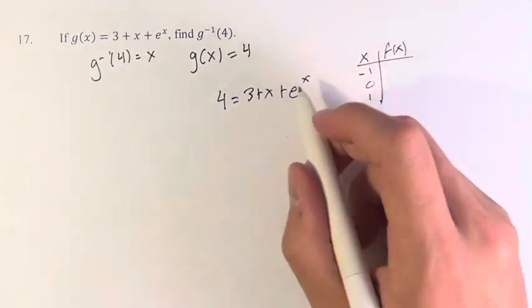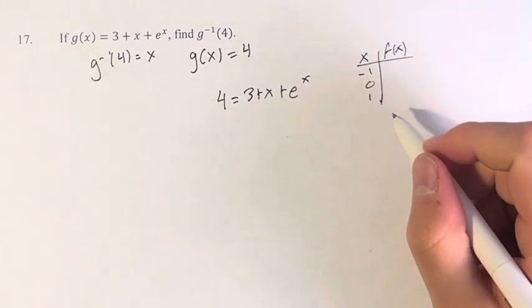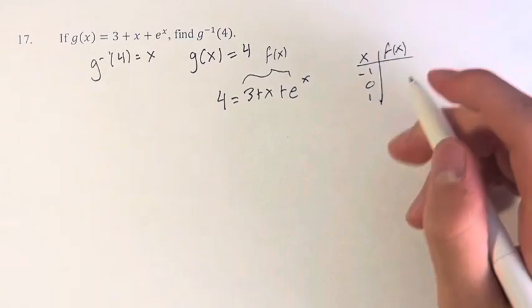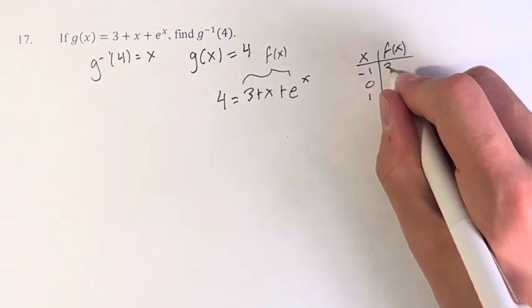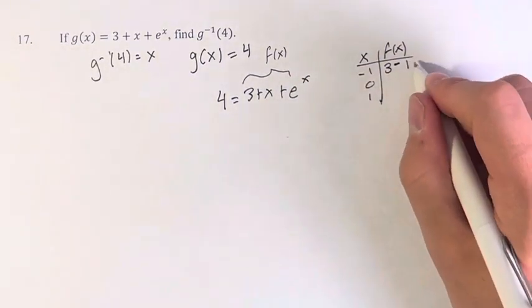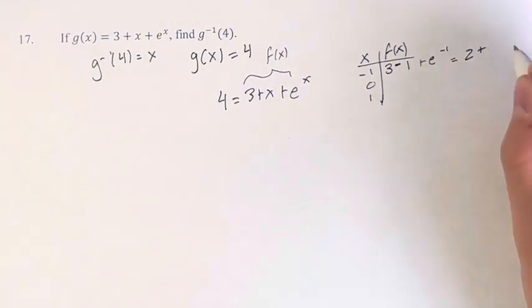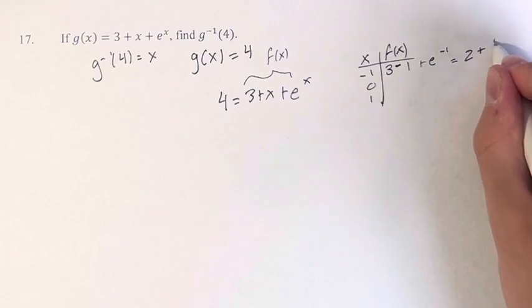And so here we have this function, f of x, is what I'll call it. We are evaluating it at these values. So negative 1 would be 3 minus 1, because it's plus negative 1, plus e to the negative 1. 3 minus 1 is 2. e to the negative 1 is 1 over e.